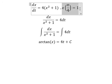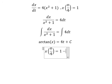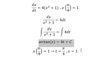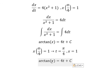So we have the condition. That means when t equals to π over 4, x equals to 1. So we put 1 in here, π over 4 in here.